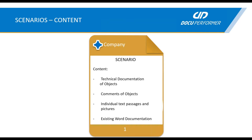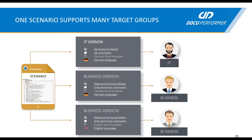You can also create individual passages with pictures, and recently it is also possible to add Word documentation that you already have available. An additional advantage of scenarios is that you can address them to different persons in your business. For someone in IT you prefer detailed technical documentation, while for the business counterpart you would reduce technical specifics. You can also configure in which language the document should be created. We call these settings variants, and they allow you to set up how detailed your technical documentation should be.